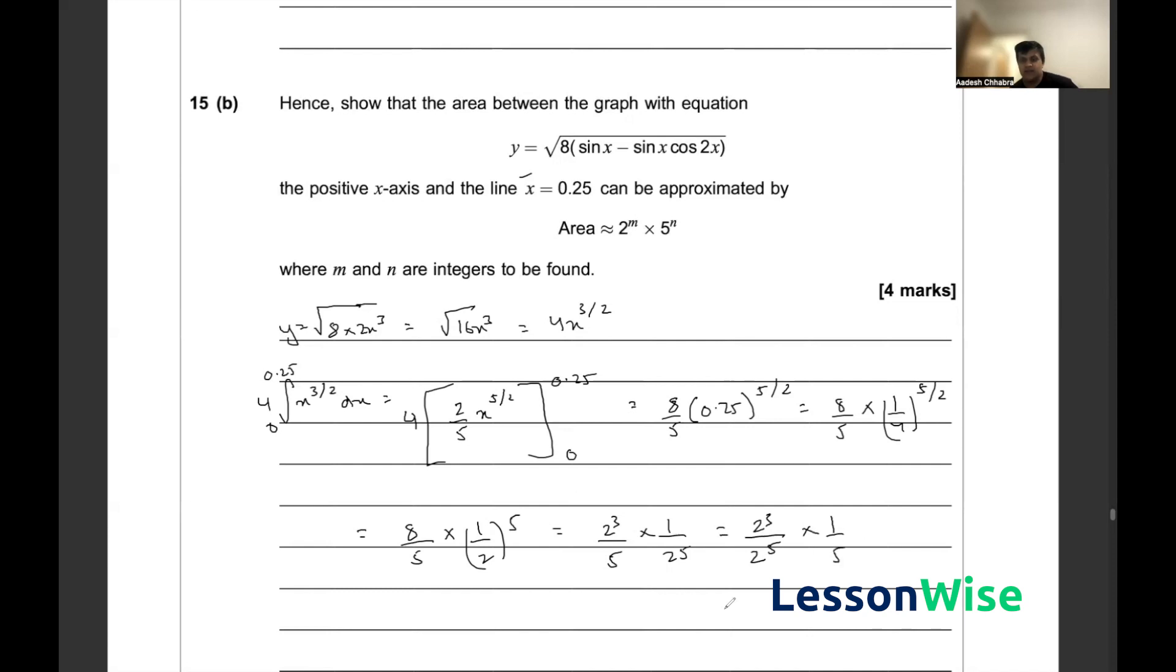Bringing this into index form, this becomes 2 to the minus 2 times 5 to the minus 1, hence shown.